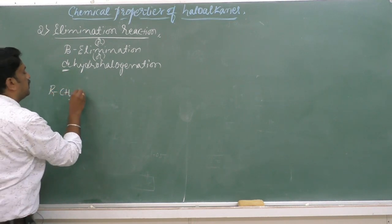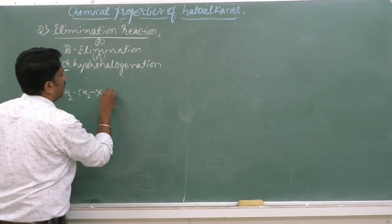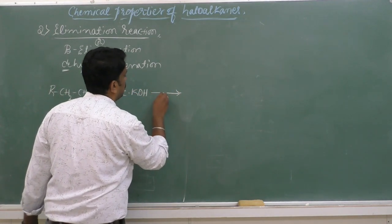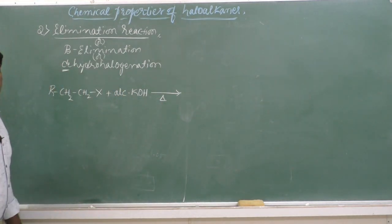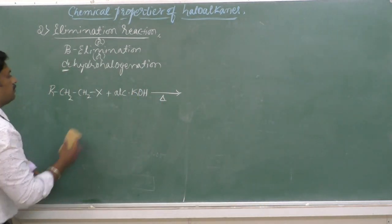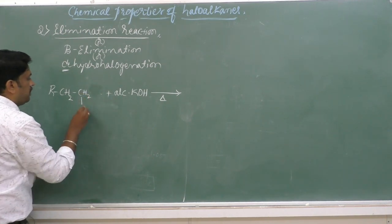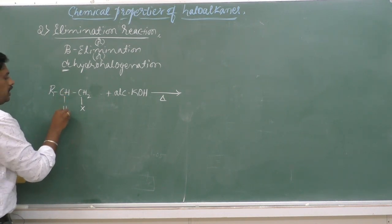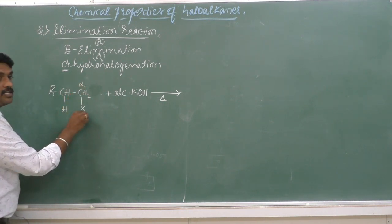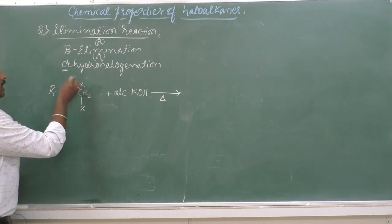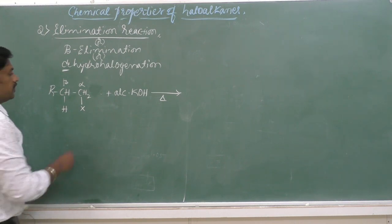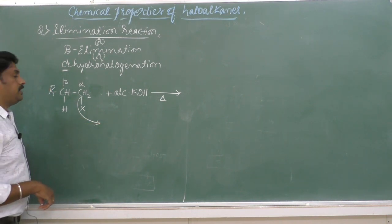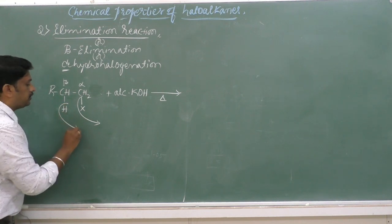When haloalkanes are treated with alcoholic potassium hydroxide, the halogen atom is removed from the alpha carbon — the carbon to which the halogen is directly attached is called the alpha carbon. The next carbon is the beta carbon. In this case, the alpha carbon loses the halogen as a halide ion, and the beta carbon loses hydrogen as an H⁺ ion.